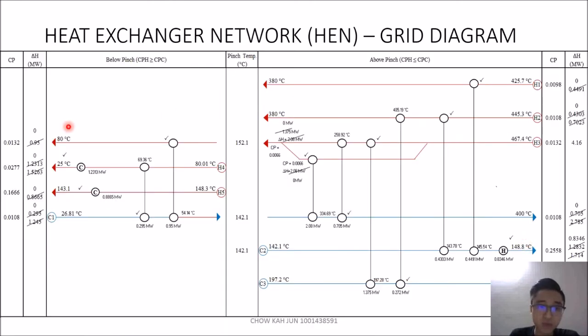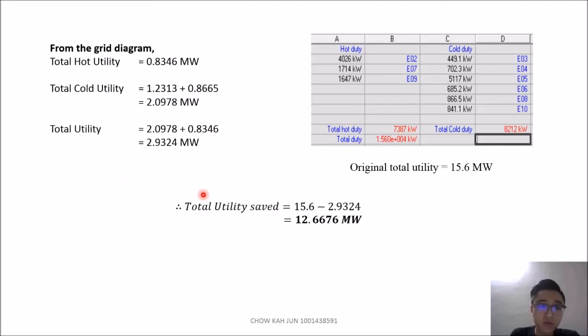This is the grid diagram or heat exchanger network. I have to skip the part where I go one by one for the heat configuration due to time constraint. I will jump to why I split this into two streams, because this CP hot is more than CP cold which violates the above pinch rule. When I split it, it's divided by two. There are two heat loops here which we can combine into one heat exchanger. From the grid diagram, total utility is 2.9 megawatts while utility from the PFD generated by Unisim is 15.6 megawatts. Therefore, the utility we can save is 12.7 megawatts. That's all. Thank you.